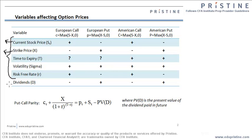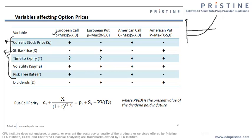I have clubbed the dividends as well. Before we actually start, what is the relationship of these 5 parameters with the options? Let us revisit what a call and put option is. If you remember, the payoff for the call option is like this. And the intrinsic value of the call option is given by max of S minus X comma 0. This particular payoff will consist of intrinsic value and the time value.